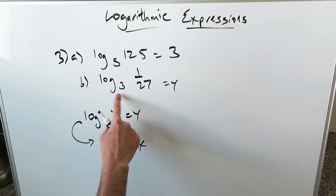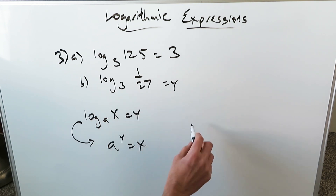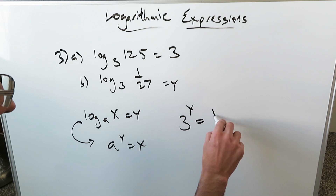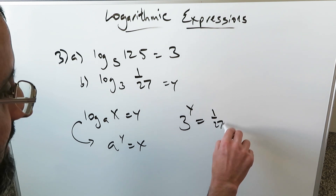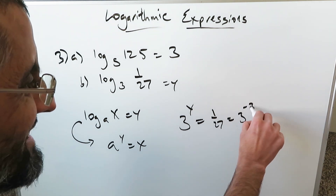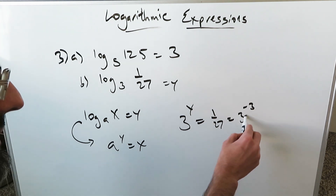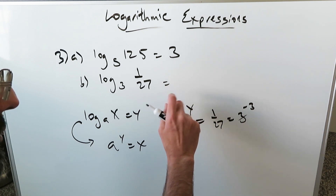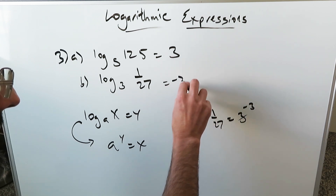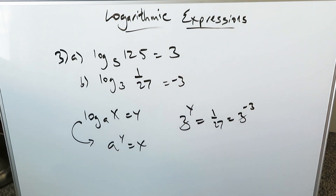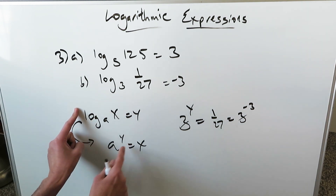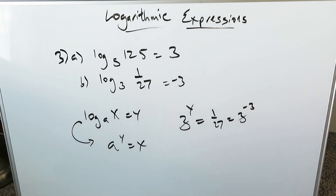Look at this: log base 3 of 1/27 equals Y. You can again bring in the exponential. 3 to the Y is equal to 1 over 27, which is equal to 3 to the power of minus 3. These will cancel — Y is equal to minus 3, and that answer will be right. You're done with these by using the template for converting logarithmic to exponential format.